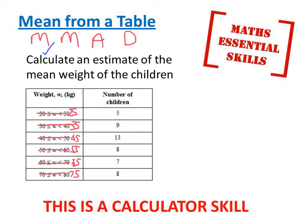We're now going to multiply. 25 multiplied by 5 is 125. 35 multiplied by 9 is 315. 45 multiplied by 13 is 585.